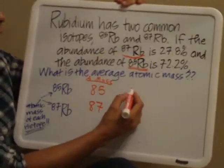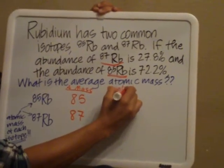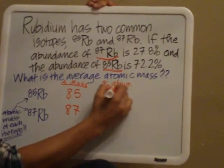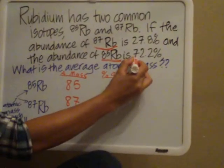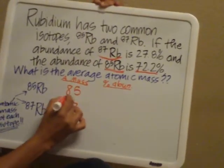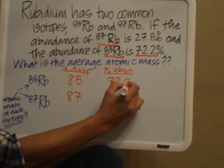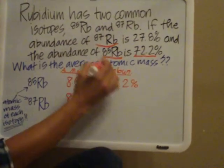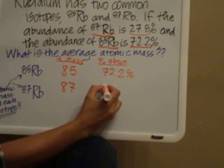And then we're going to list their percent abundance. And I'm going to abbreviate percent abundance like that. When I read up here, it says that rubidium-85 has an abundance of 72.2%. So for rubidium-85, I'll put 72.2%. And rubidium-87 has an abundance of 27.8%. So I'm going to put right here, rubidium-87 has a percent abundance of 27.8%.